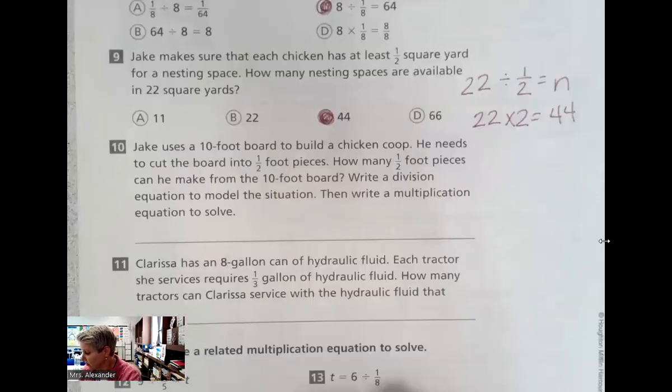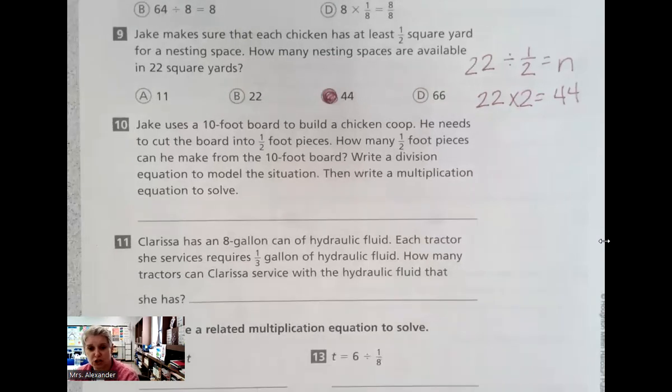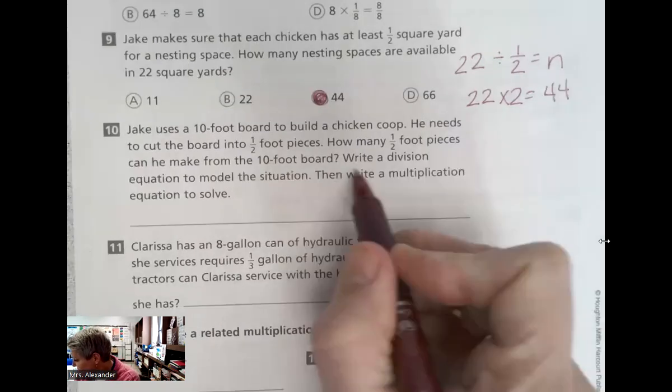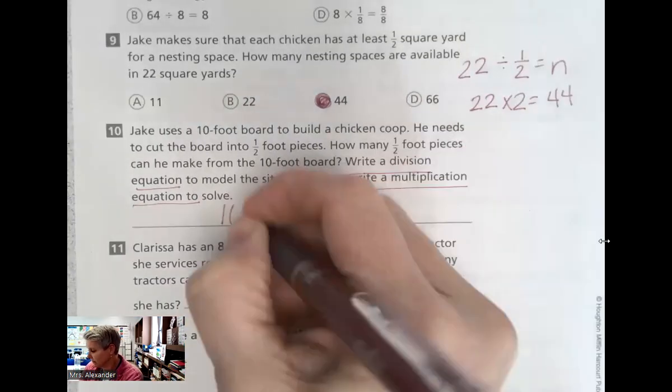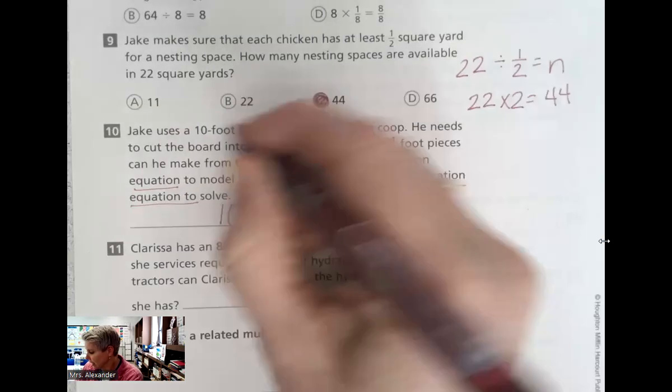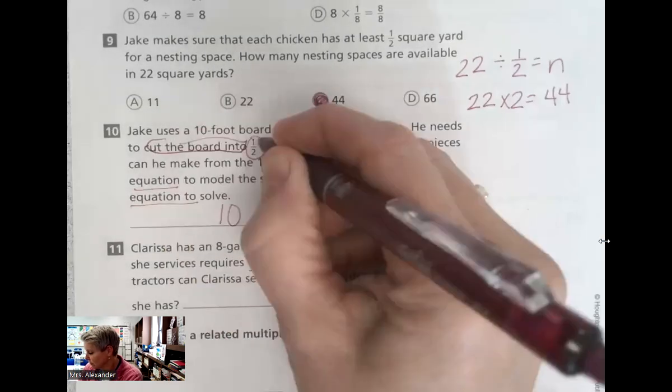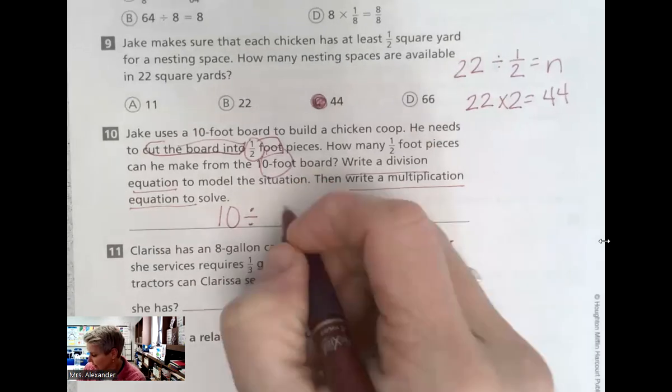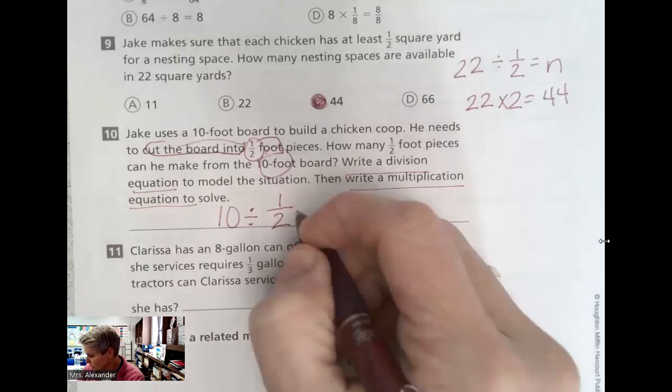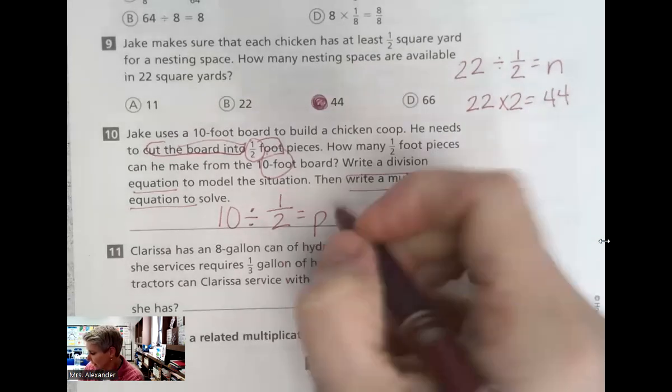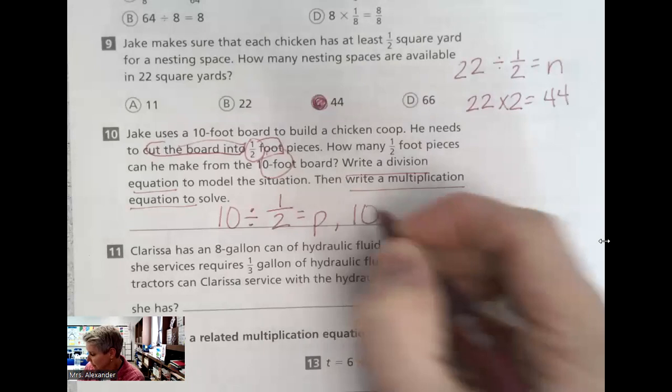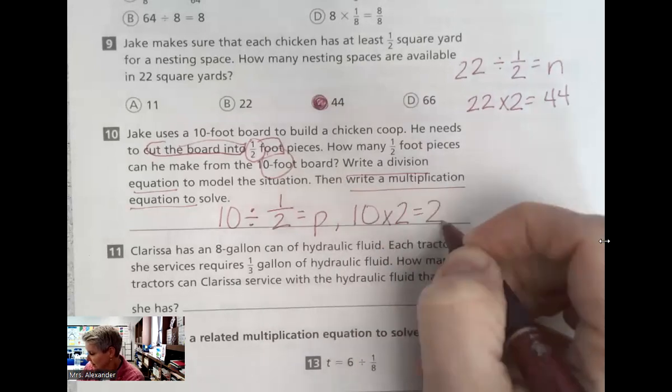Jake is doing a lot. He uses a 10-foot board to build a chicken coop. He needs to cut the board into half-foot pieces. How many half-foot pieces can he make from the 10-foot board? Write a division equation, then write a multiplication equation to solve. He's got a 10-foot board right there. He wants to cut the board into half-foot pieces. So we're taking that 10 feet. We're dividing it by one-half foot to equal the number of pieces. So there's my division equation. My related multiplication equation would be keep, change, flip. He could get 20 pieces.